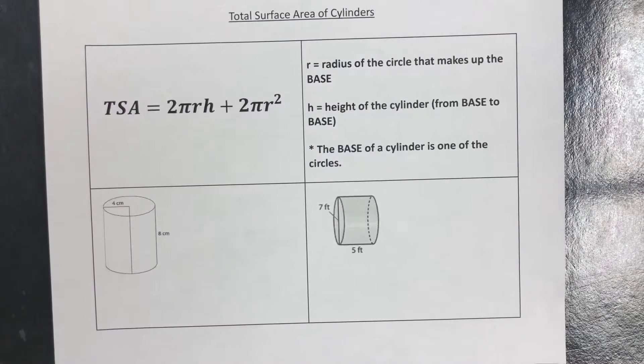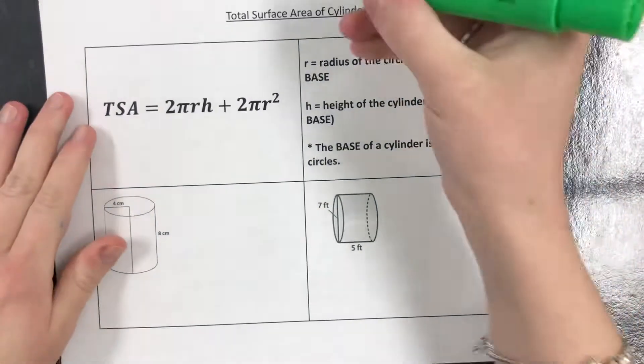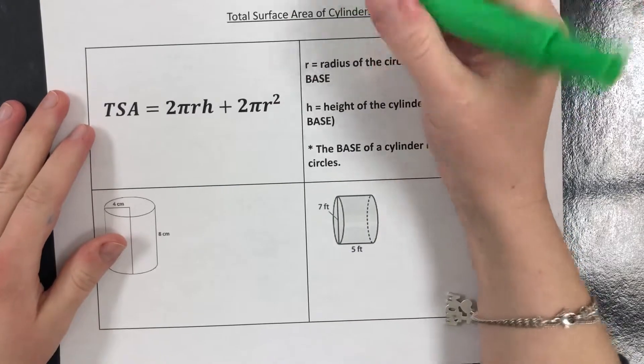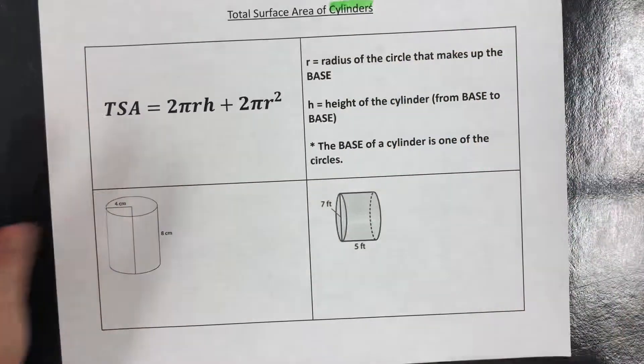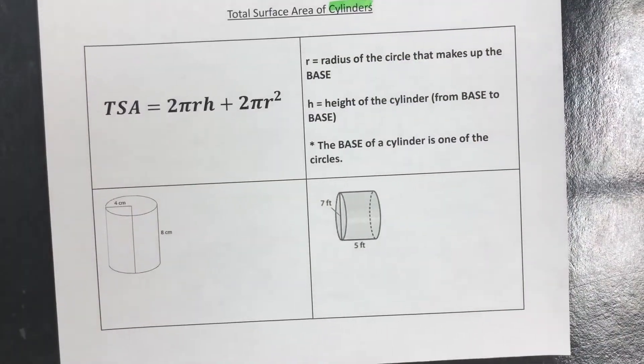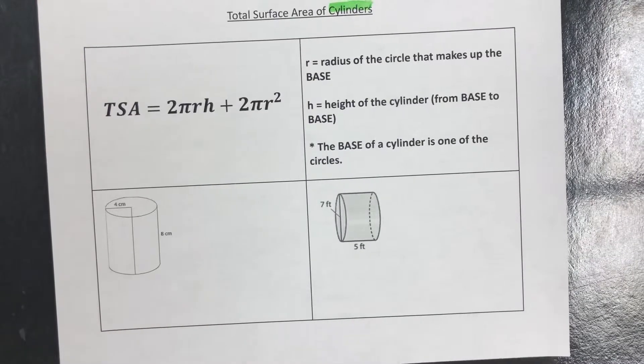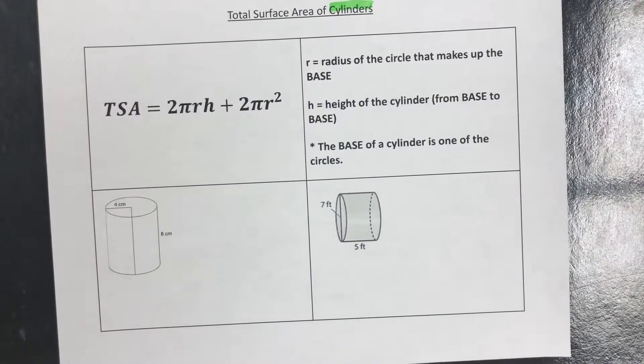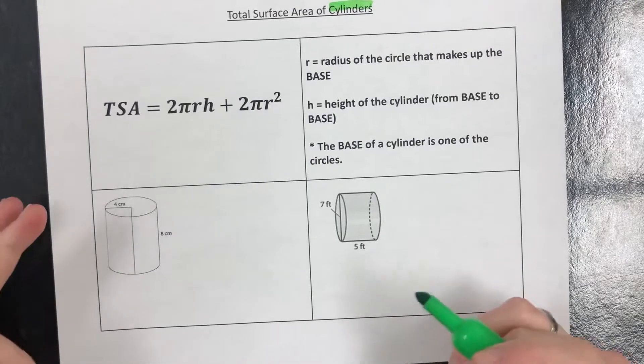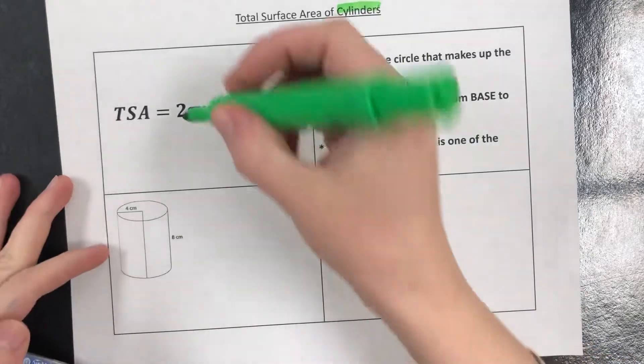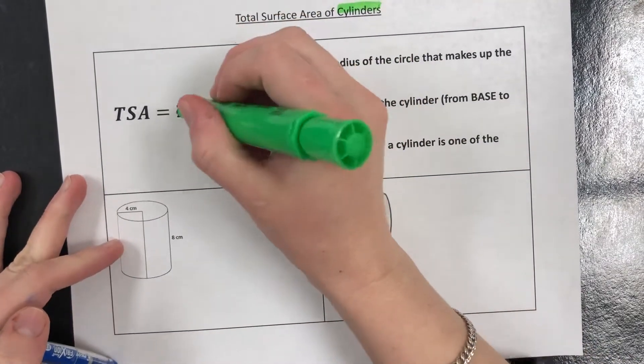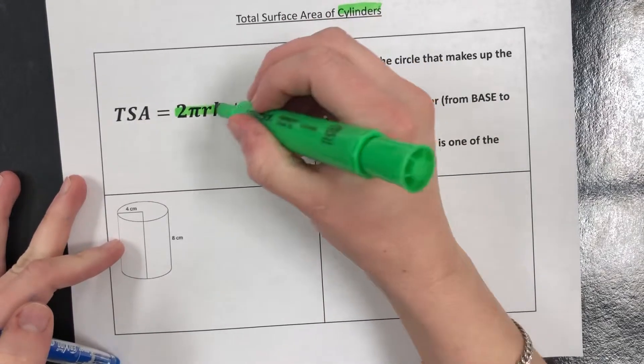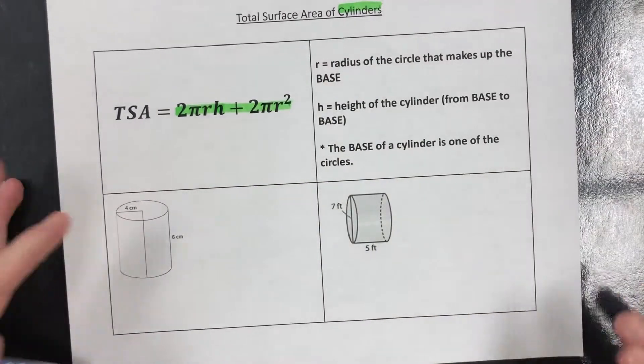Next up is the total surface area of cylinders. Cylinders are the easiest one out of all the shapes to find the surface area of because on your formula chart they give you exactly what you need. Your formula is TSA = 2πrh + 2πr².